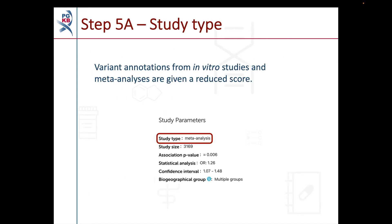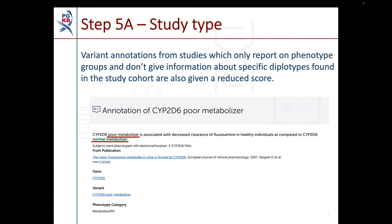Step 5 acts as a multiplier in the algorithm and is split into two parts. Step 5a gives a reduced score for meta-analysis studies and in vitro studies. Scores from meta-analyses are reduced to avoid potential double scoring of the original datasets, which may have already been annotated into PharmGKB. In vitro studies, for example those carried out in cell lines or tissue samples, are given a reduced score as their findings may not necessarily be directly translatable to what happens in patients. Studies which only provide associations in the context of phenotype groups instead of specific alleles or diplotypes are also given a reduced score in step 5a, as while these annotations can give an indication of the general direction of a pharmacogenetic association, they don't have the specificity needed to base a clinical annotation on them.